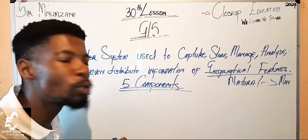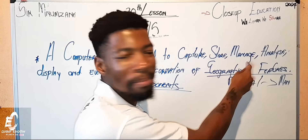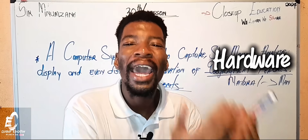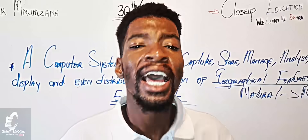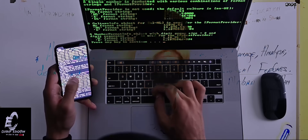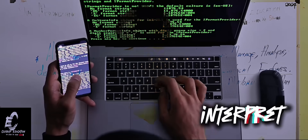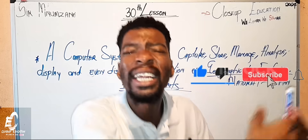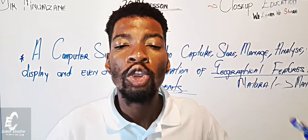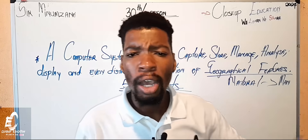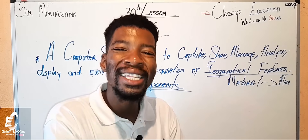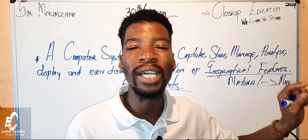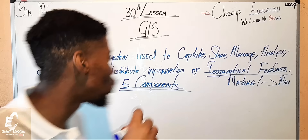When we name the five components, we start with the most important one. To capture, store, and manage data, we need the hardware component. Hardware includes objects such as satellites — which we launch to capture information — computers to capture and interpret that information, and printers to distribute it. The most important hardware components in GIS are computers and satellites.